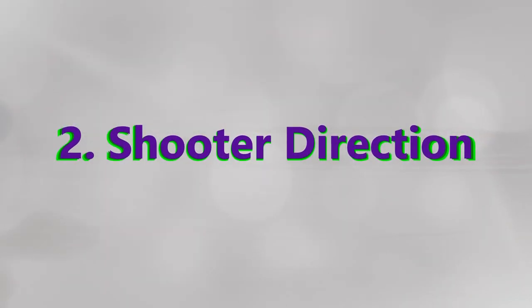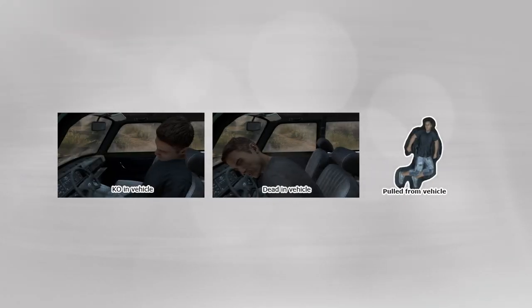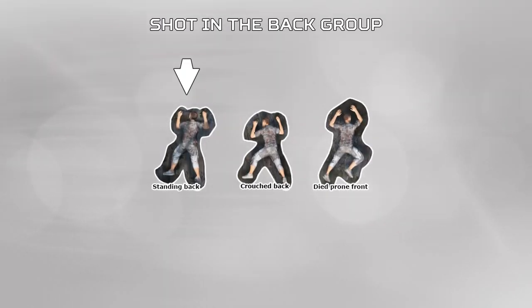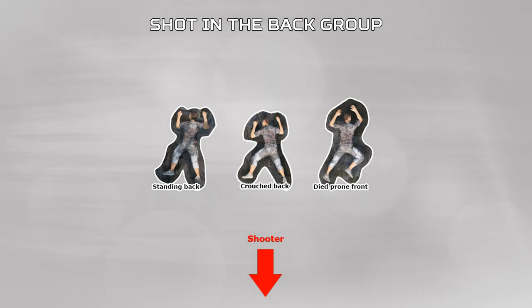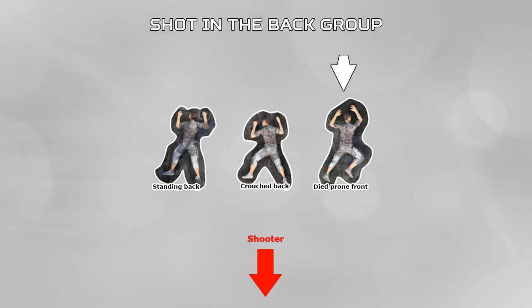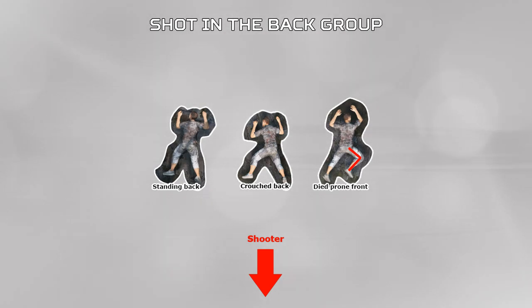I'm not expecting anybody to remember all 21 different animations in DayZ — that would be ridiculous — so I've put them into groups based on the direction to identify them easier as to where a player was killed from. First is the shot in the back group: standing and crouched. The shooter's position is indicated by this arrow. The only other animation which is similar is the prone laying on front death animation, which can be easily excluded by the arm position being much higher on the prone one, and the legs having a sharp 90 degree angle on the prone stance.